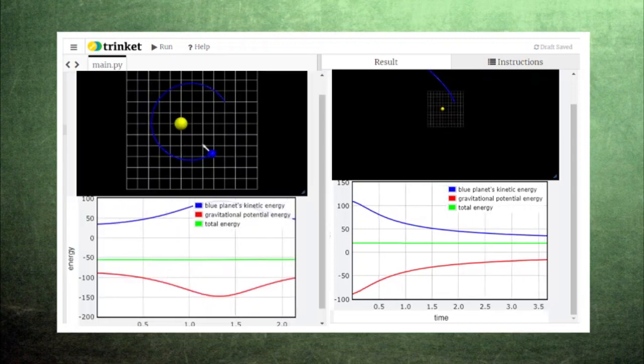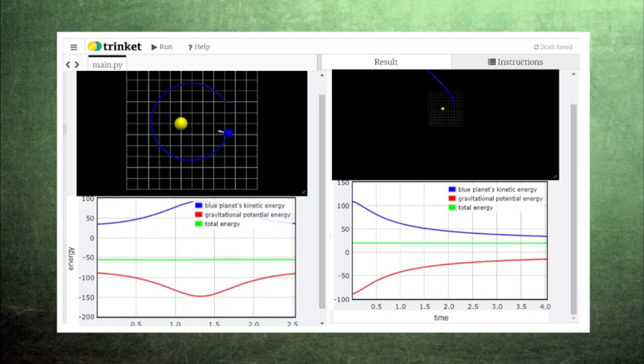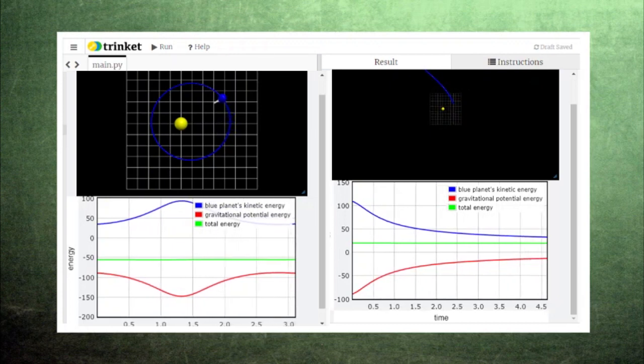This is the key difference between orbiting around a star and escaping from a star, whether the total energy is positive or negative.